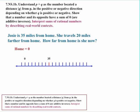Josie is 35 miles from home — that's her starting point, assuming home is 0. She travels 20 miles farther from home. How far from home is she now? Starting at 35 and going a distance of 20 in the positive direction, that puts us at 55 miles from home.